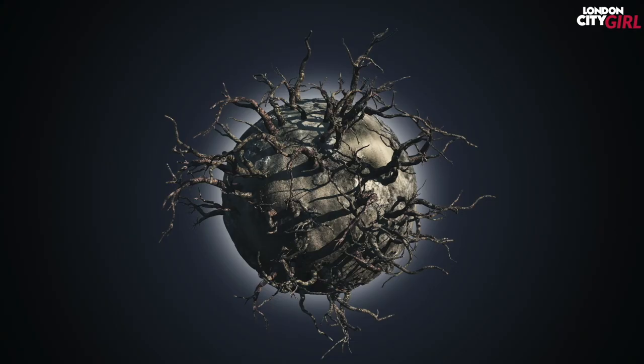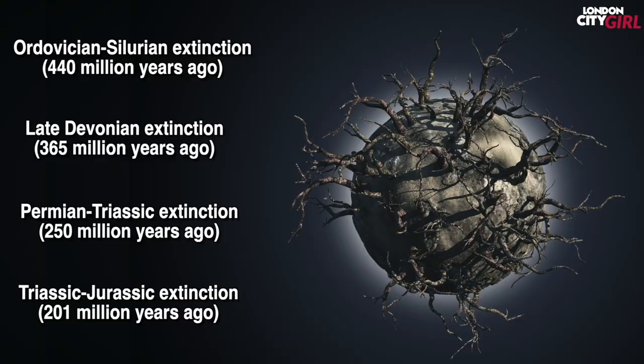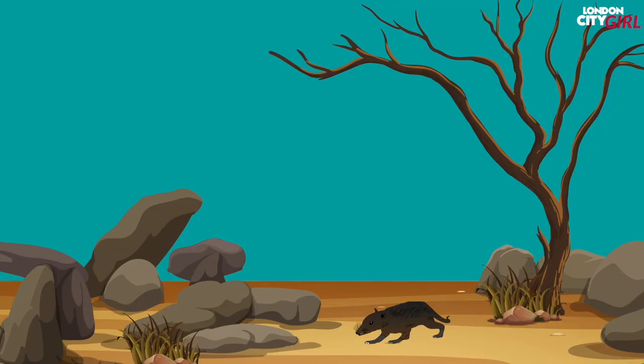Nearly 75 percent of all living species were eliminated owing to a combination of factors including an asteroid impact, choking chemicals from erupting volcanoes and climate change. Mass extinctions are not unusual in Earth's history. We know of four other instances of mass extinction before the one that wiped out the dinosaurs. The death of the dinosaurs allowed mammals to flourish. These mammals would eventually evolve into many species including humans.